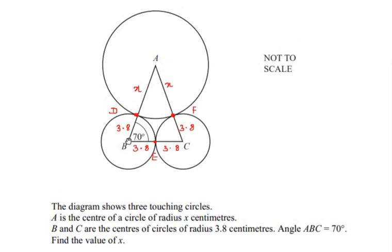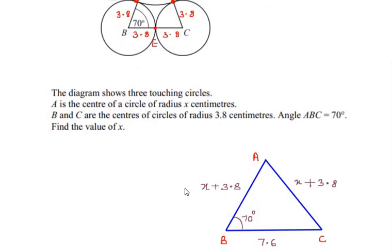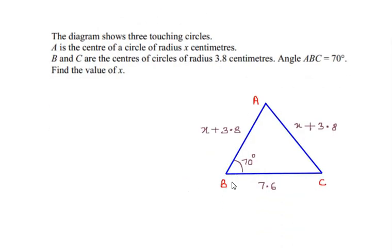So let me draw it again. You can see here that I have drawn only the triangle ABC and I have removed all the three circles.